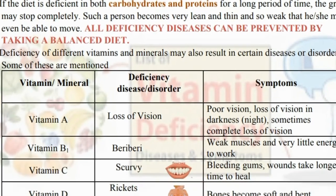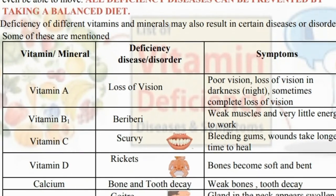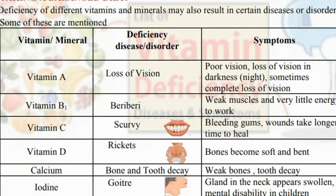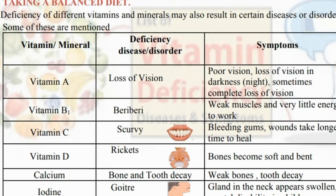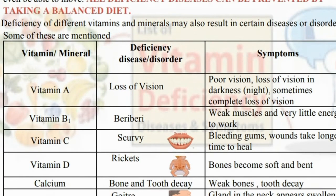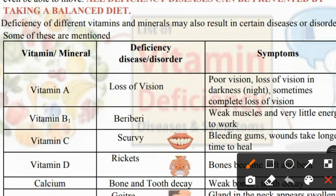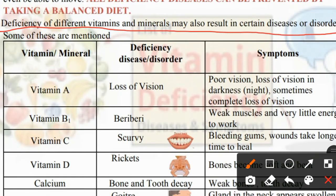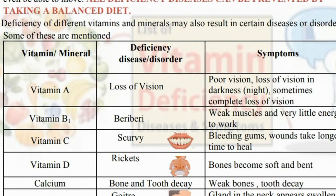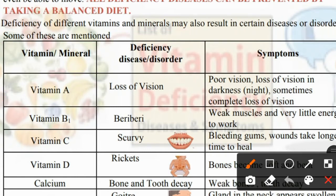Now you will see the table here — it shows which disease can be caused by deficiency of which mineral or vitamin, and its symptoms. Deficiency of different vitamins and minerals may also result in certain diseases or disorders. In this table, vitamins and minerals tell you which disease results from their deficiency.